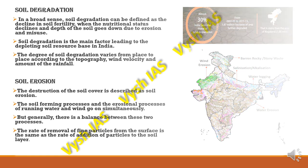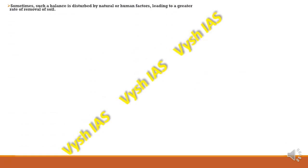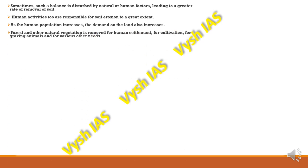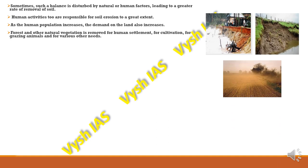However, human factors can lead to a greater amount of soil removal, and many human activities are responsible for soil erosion to a great extent. As human population increases, demand on land increases — land is cleared for human settlements, developmental projects, cultivation, grazing animals, and various other needs. You can see how the force of water literally makes soil weak and causes it to slide downwards.